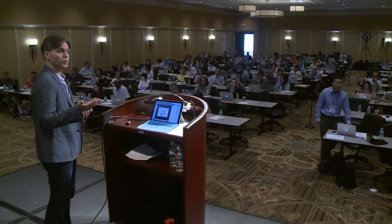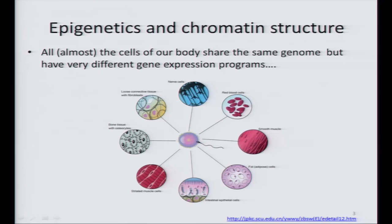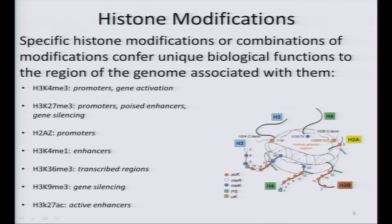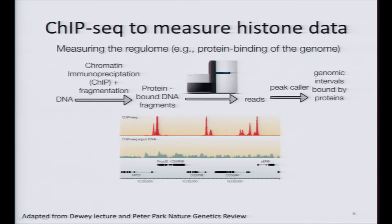I don't need to give an introduction because we have already been talking about epigenetics and chromatin structure and how epigenetics influence gene expression. One key idea is that we have different histone modifications that are associated with different functional regions. For example, some marks are usually associated with enhancers, some marks with promoters, or with repressed regions.